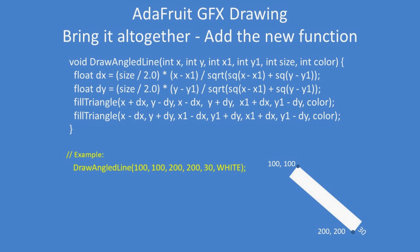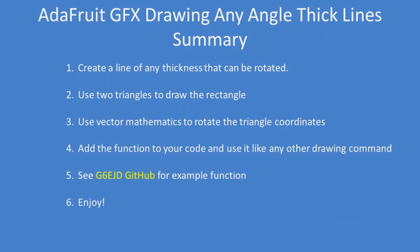In summary then, you can create a line of any thickness that can be rotated so you can draw lines at angles, horizontal lines, or vertical lines of various thickness using two triangles to draw the rectangles and uses vector mathematics to rotate the triangle coordinates.